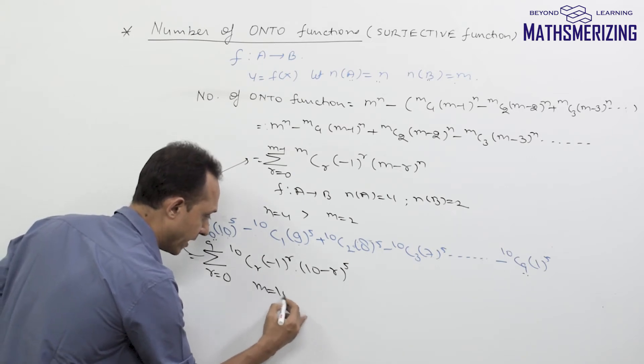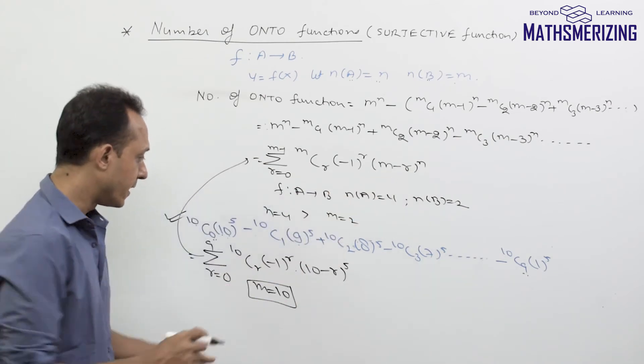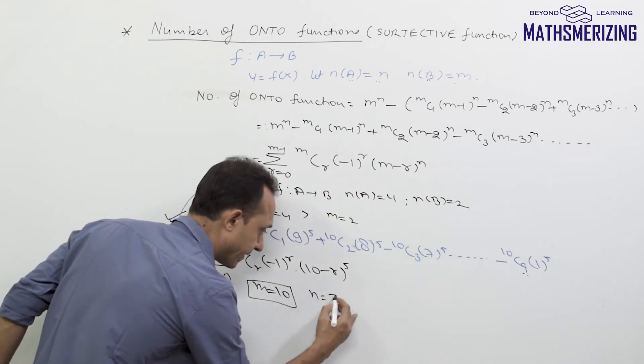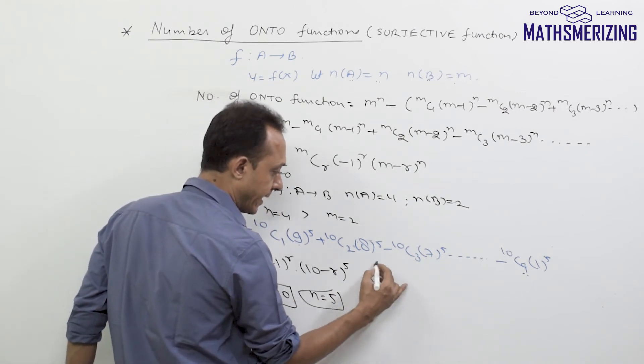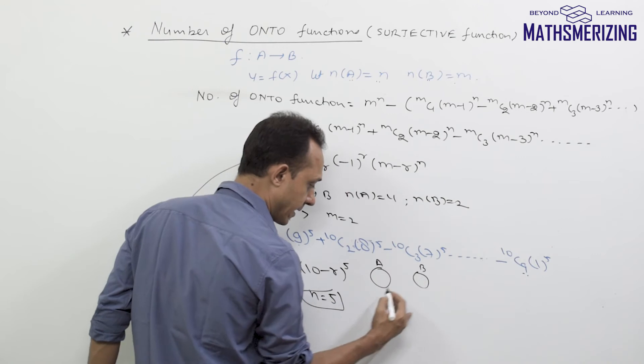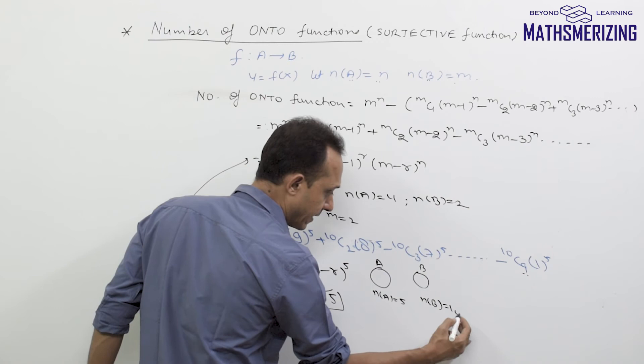Here the value of m is 10. If I look at the value of n, the value of n is 5. So I need to find number of onto functions from set A to set B where number of elements in set A is 5 and number of elements in set B is 10.